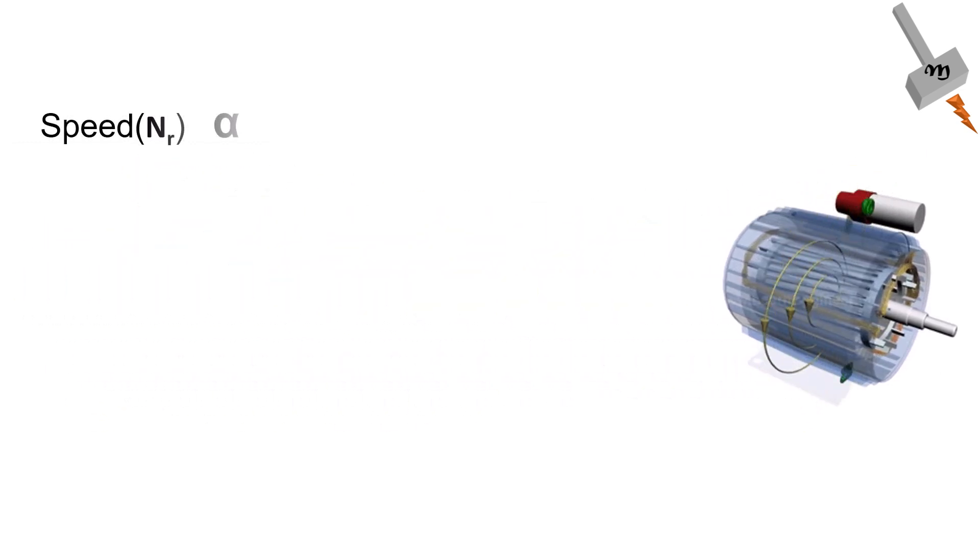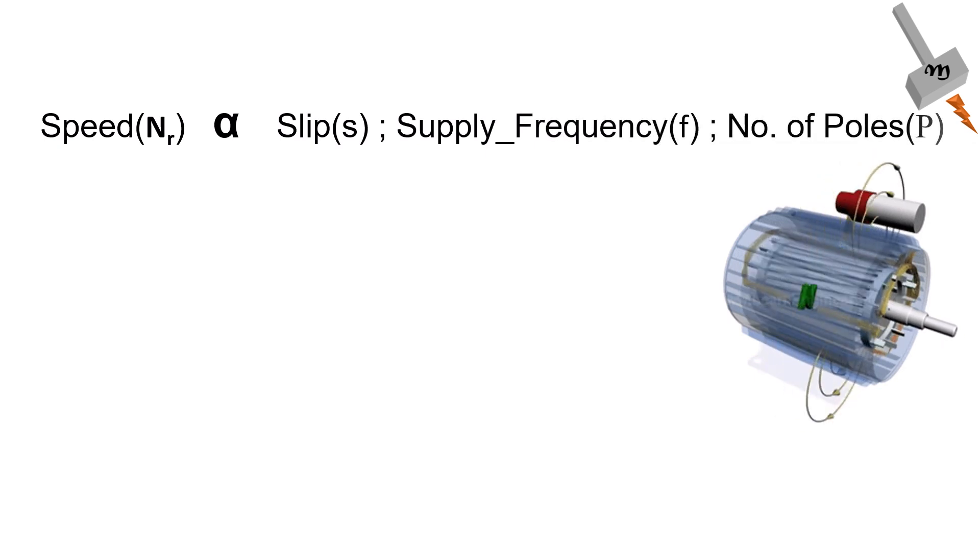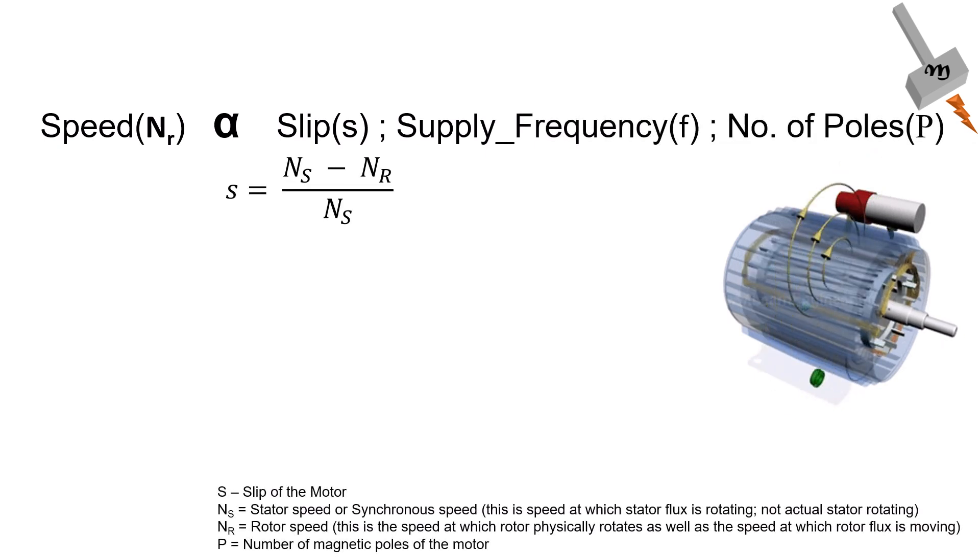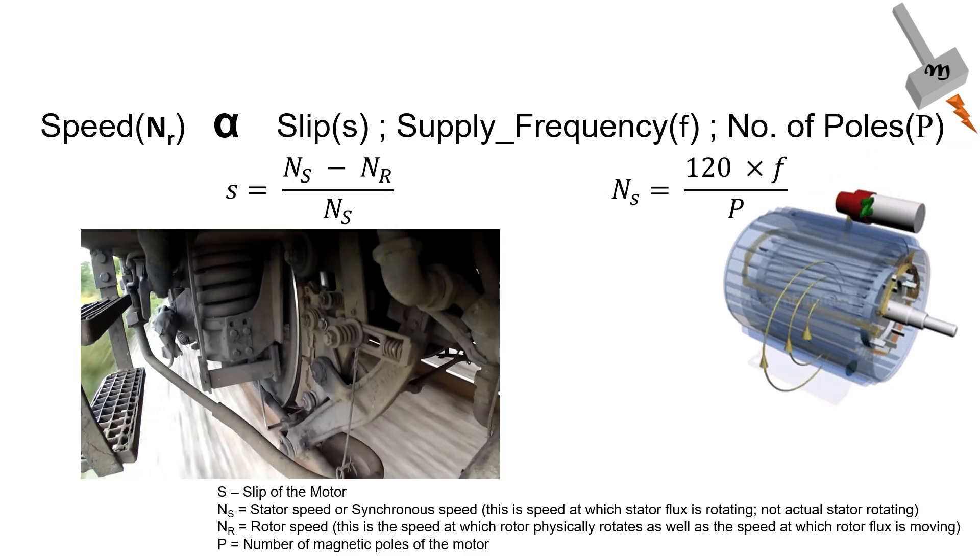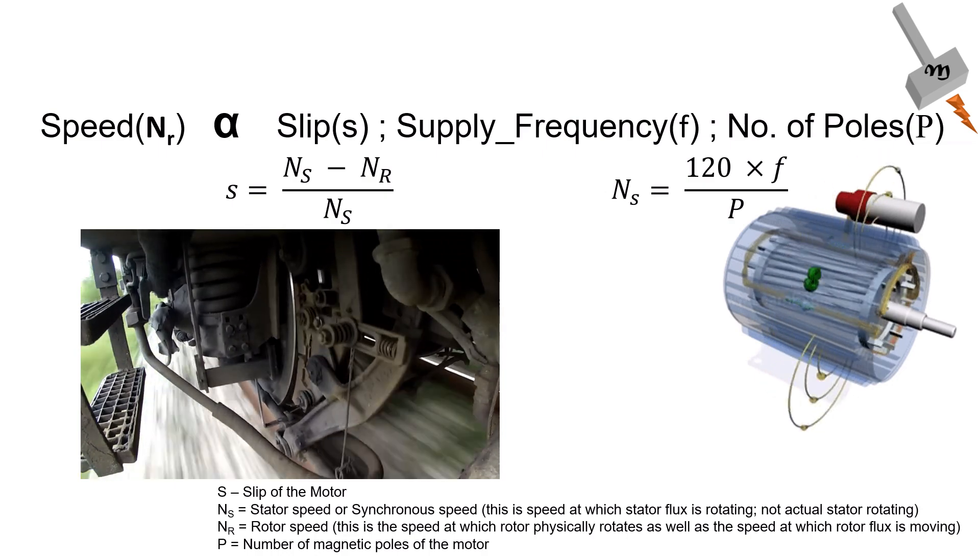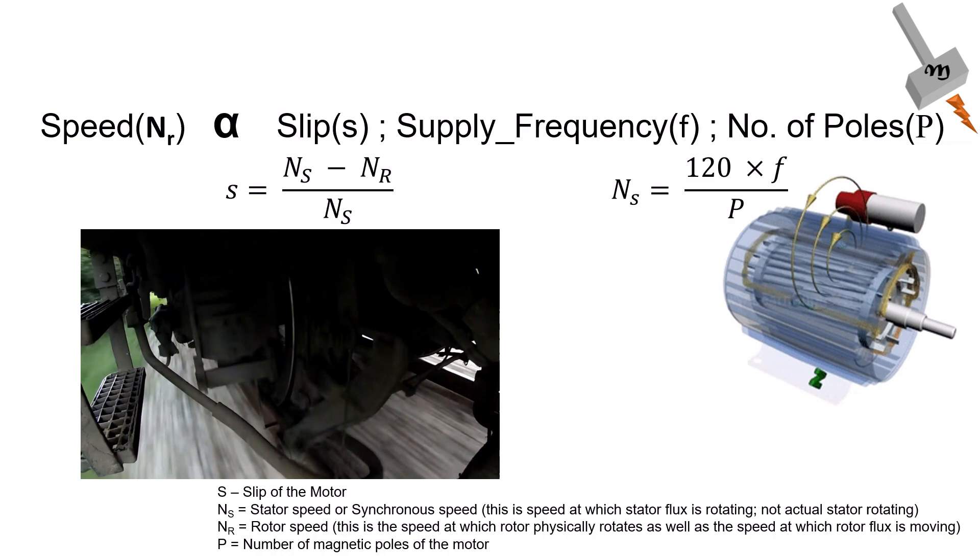Speed is proportional to slip, supply frequency to motor, and number of poles. Supply frequency decides how fast the magnetic flux linking stator and rotor revolves, thus the speed. And finally, lower the number of poles, higher will be the speed. But here's the catch. Number of poles has an impact on the torque of the motor. Lower the poles, lower is the torque, more torque fluctuation, and less smooth ride of the locomotive.